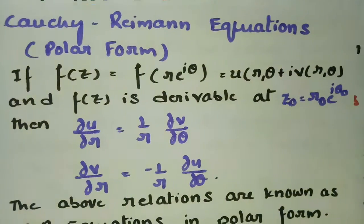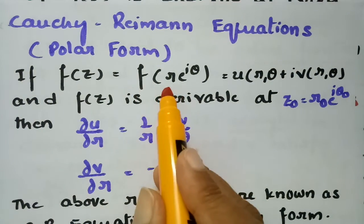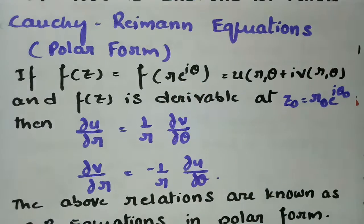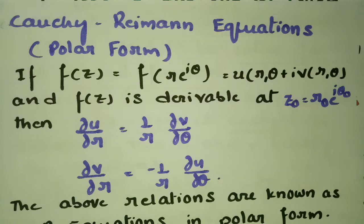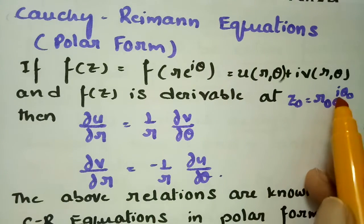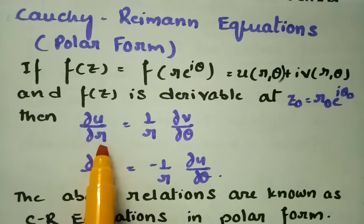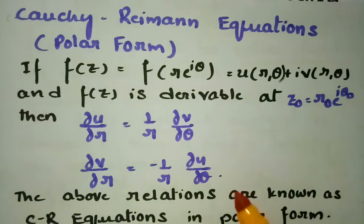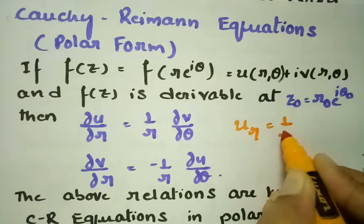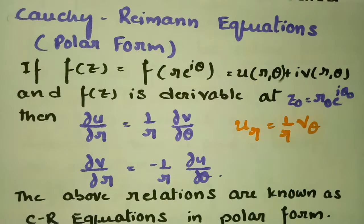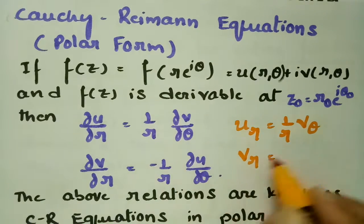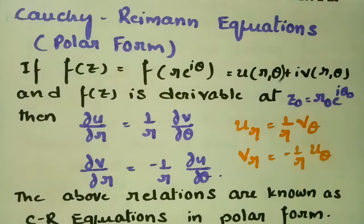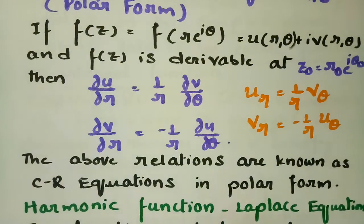Next, coming to the Cauchy-Riemann equations in polar form. Here f(z) is in the form f(r·e^(iθ)), with r and θ as polar coordinates. So f(z) = u(r,θ) + i·v(r,θ). If f(z) is derivable at point z-naught = r-naught·e^(iθ-naught), then ∂u/∂r = (1/r)·∂v/∂θ and ∂v/∂r = −(1/r)·∂u/∂θ. These are the CR equations in polar form.